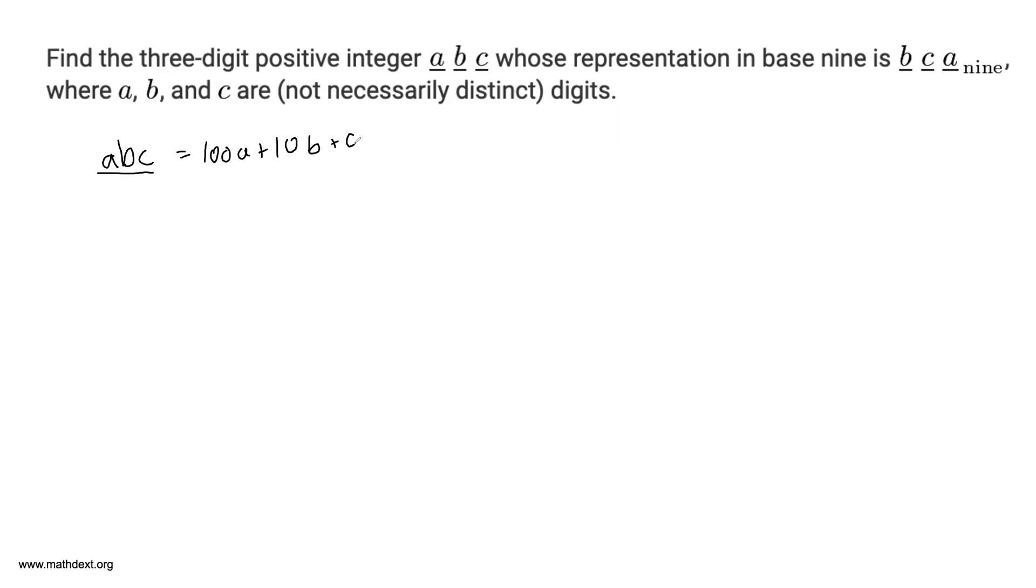Remember, if A, B, and C are digits, then the three-digit number ABC is 100 times A plus 10 times B plus C, like 432 is equal to 4 times 100 plus 3 times 10 plus 2. That's why I'm able to write it out like this.